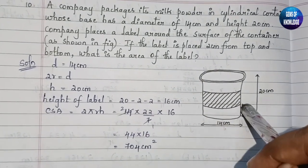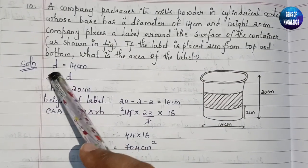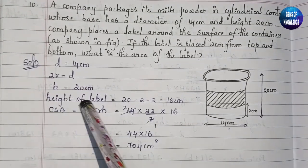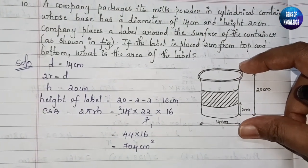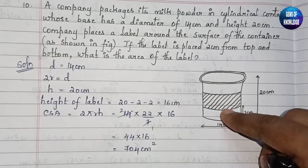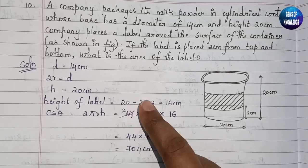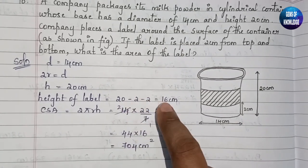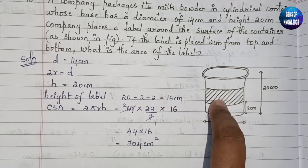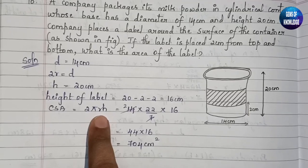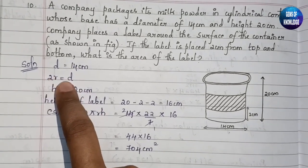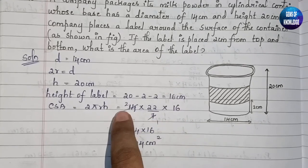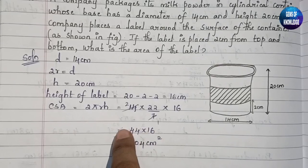We need to find the area of the label. Diameter = 14 cm, so 2r = 14. Total height = 20 cm, but the label starts 2 cm from top and 2 cm from bottom, so label height = 20 − 2 − 2 = 16 cm. CSA = 2πrh = 14 × (22/7) × 16. The 7s cancel: 2 × 22 × 16 = 44 × 16 = 704 cm².